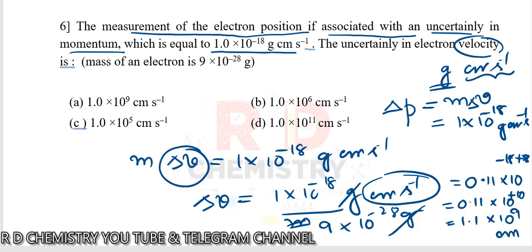The uncertainty in velocity is 1.1 × 10⁹ cm·s⁻¹. The answer is option A.